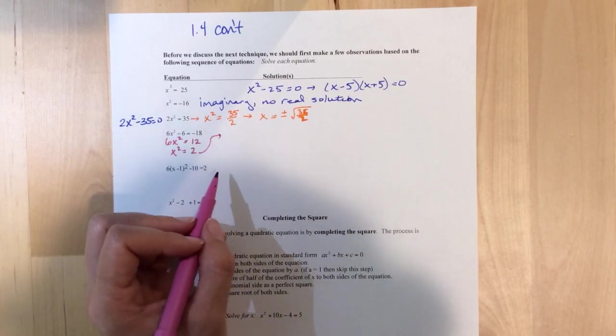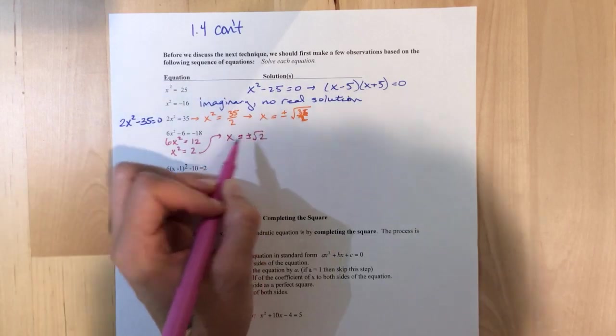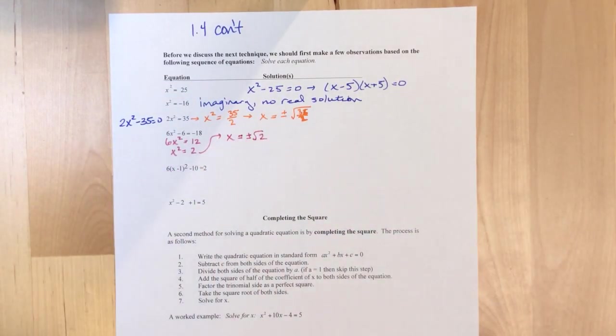Divide by 6. x squared equals 2. Come up here. Square root method. x equals plus or minus root 2. Right? So far, so good.